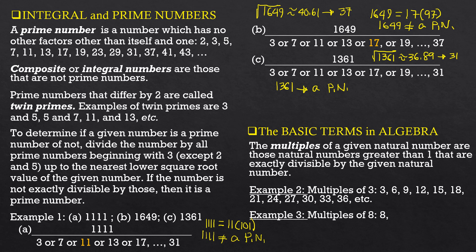Another example: multiples of 8 are 8, 16, 24, 32, 40, 48, 56, 64, 72, 80, 88, 96, 104, 112, 120, 128, 136, and so on and so forth. Those are the multiples of 8.